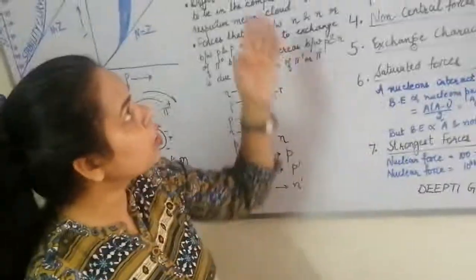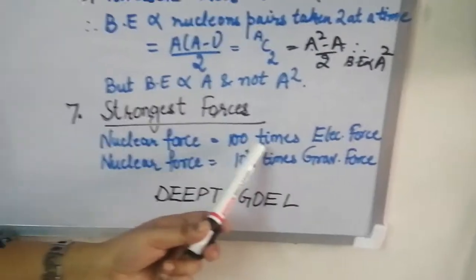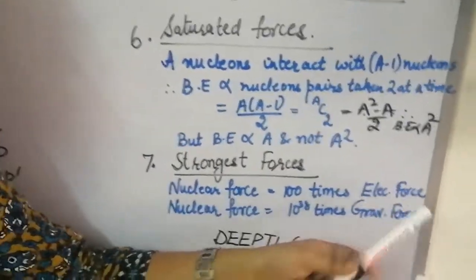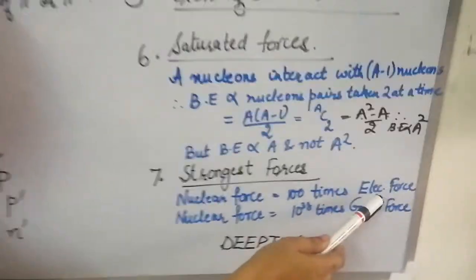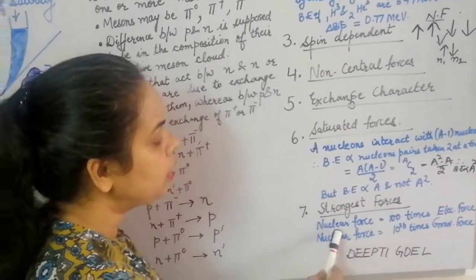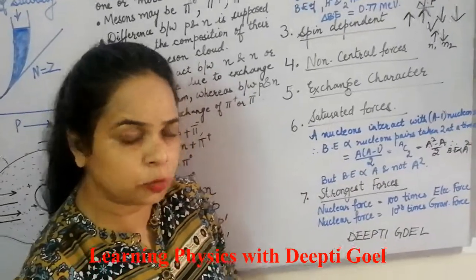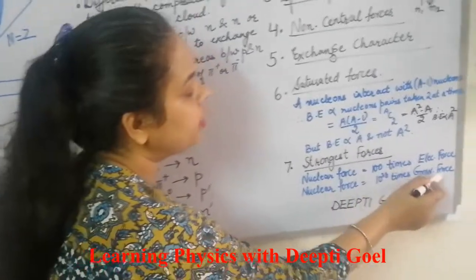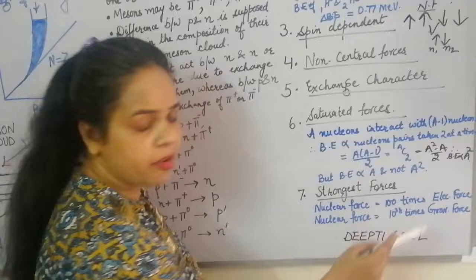The last and most important property of nuclear forces is that they are the strongest forces in nature. Nuclear forces are 100 times stronger than electrostatic Coulombic repulsive forces, and 10 raised to power 38 times stronger than gravitational attractive forces. Since the nuclear force is 100 times stronger than Coulombic repulsion, two protons can be bound together inside the nucleus. The electrostatic force is 10 raised to power 36 times stronger than gravitational force.